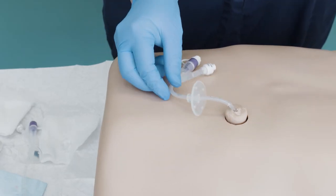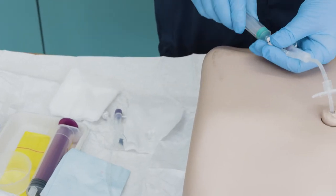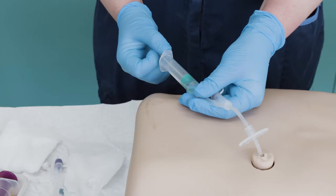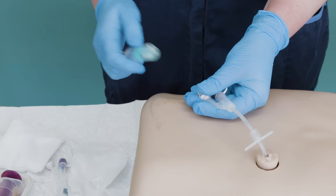Use a 5ml Luer slip syringe to deflate the balloon of the existing tube by gently drawing back the plunger on the syringe until no more fluid comes out of the balloon. This should be done twice to ensure the balloon is fully deflated.